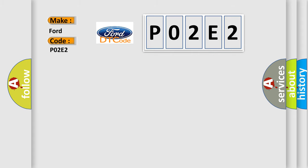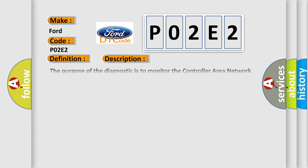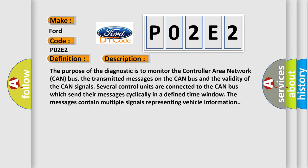The basic definition is Dedicated Powertrain DPT CAN bus off. And now this is a short description of this DTC code. The purpose of the diagnostic is to monitor the controller area network CAN bus, the transmitted messages on the CAN bus, and the validity of the CAN signals. Several control units are connected to the CAN bus which send their messages cyclically in a defined time window. The messages contain multiple signals representing vehicle information.